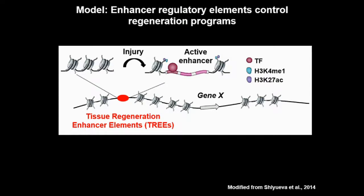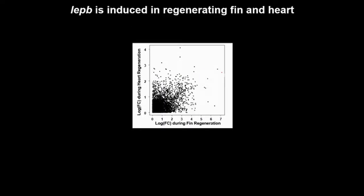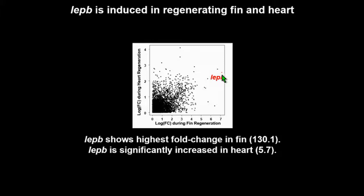Since TREEs have not been explored, we first tried to identify them. To identify TREEs, we focused on genes induced during regeneration in multiple tissues. We compared two transcriptome datasets — fin and heart. This graph shows genes with increased transcript levels in regenerating fin on one axis and regenerating heart on the y-axis. The red dot indicates Leptin B, one of two zebrafish paralogs related to mammalian leptin, a secreted protein controlling energy homeostasis. Leptin B shows high fold change in fin — over 100-fold — and is also significantly increased during heart regeneration. We confirmed Leptin B induction by in situ hybridization and RT-PCR.